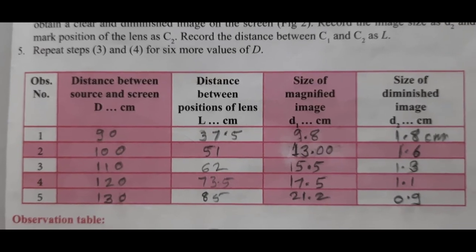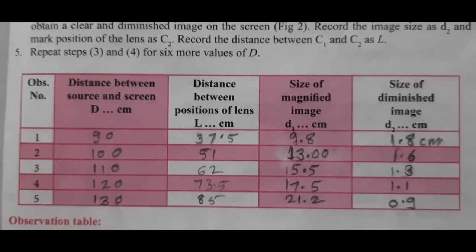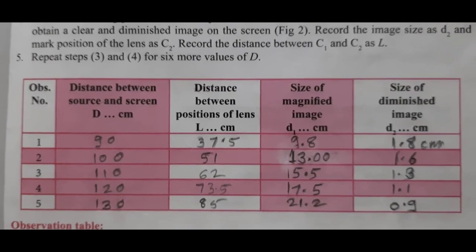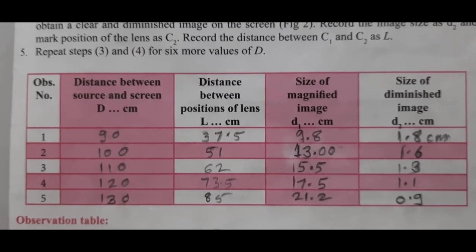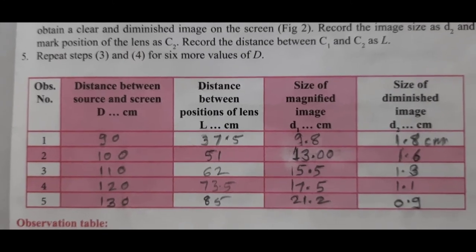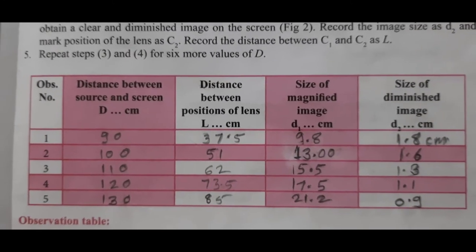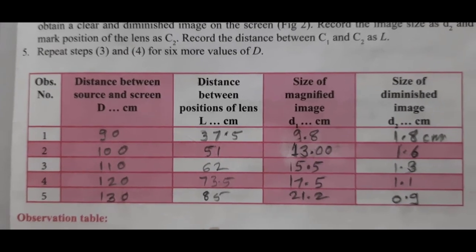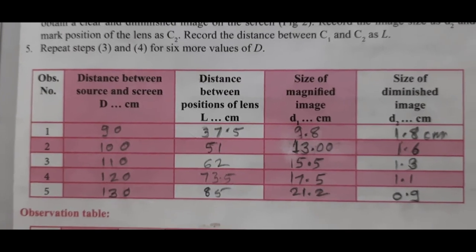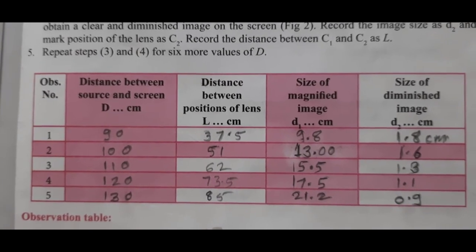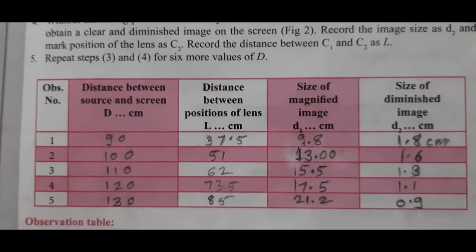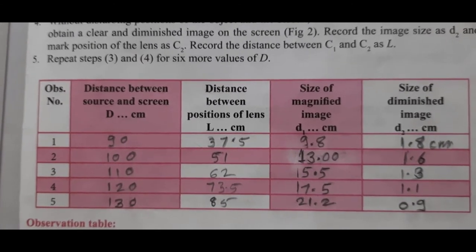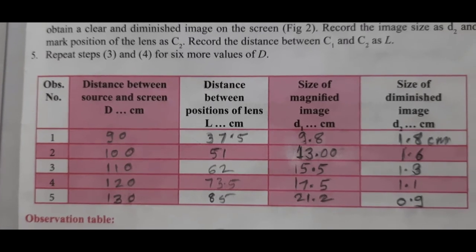In the same way, we take all readings. In the observation table, readings are taken for capital D equal to 100 cm, 110 cm, 120 cm, and 130 cm — changing the distance between the source and screen each time. For every reading, we find the size of the magnified image, the size of the diminished image, and the distance between the two lens positions. All these readings are written in the observation table.